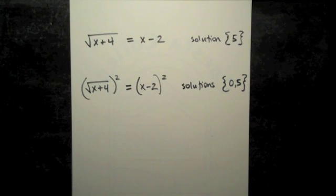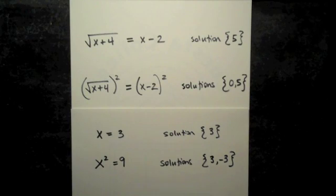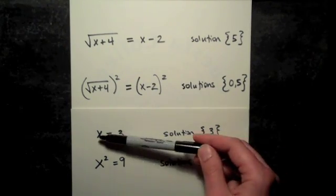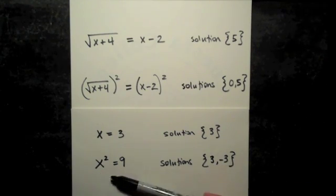A really simple example would just be something like x equals 3. Square both sides, you get x squared equals 9. The first equation just has the solution 3. That's easy to see. And the second equation has two solutions, 3 and negative 3.